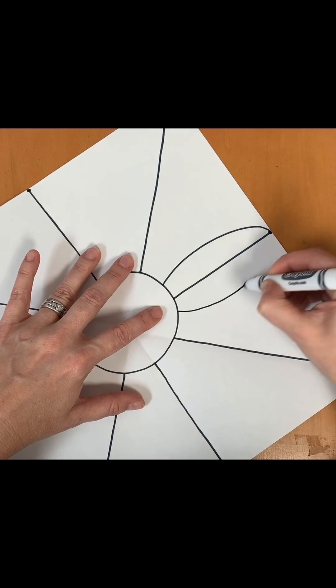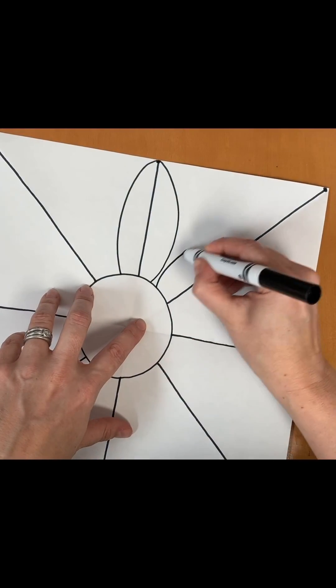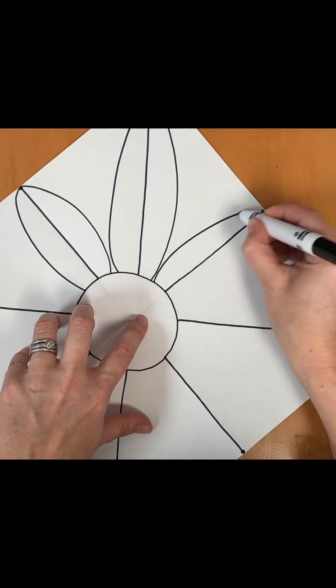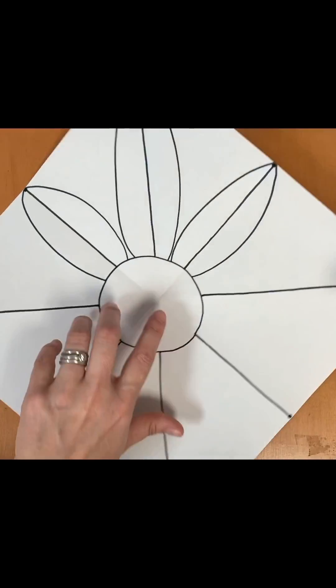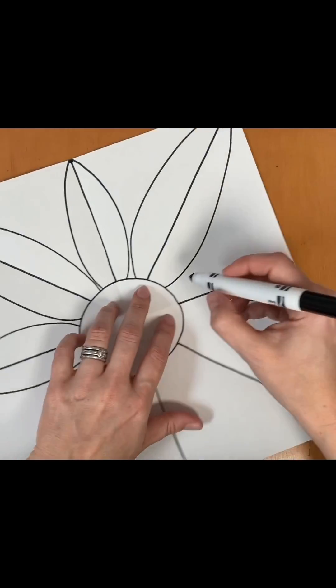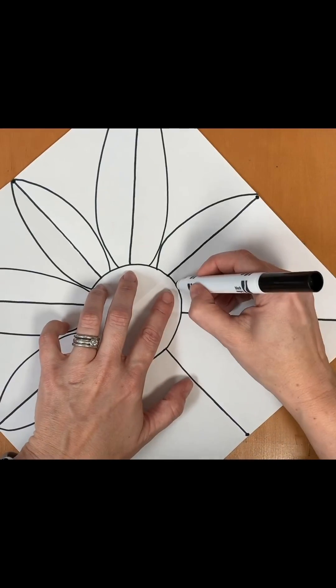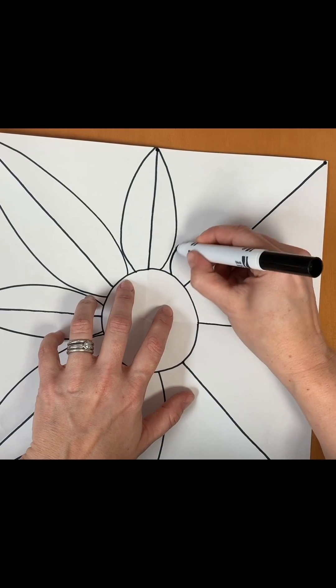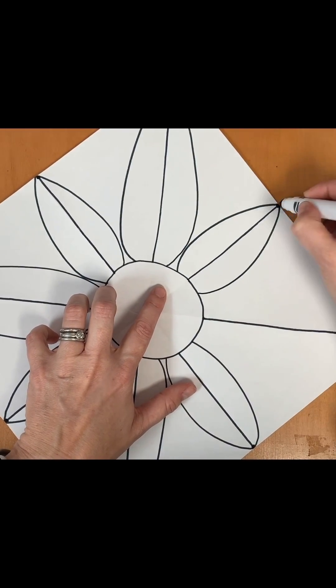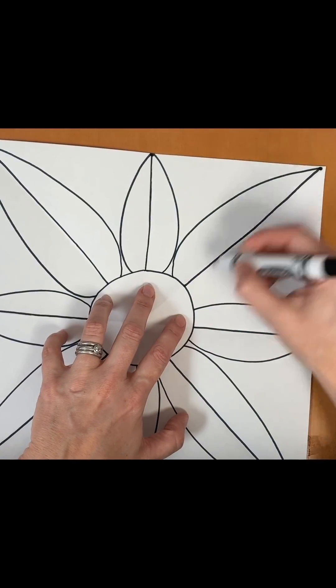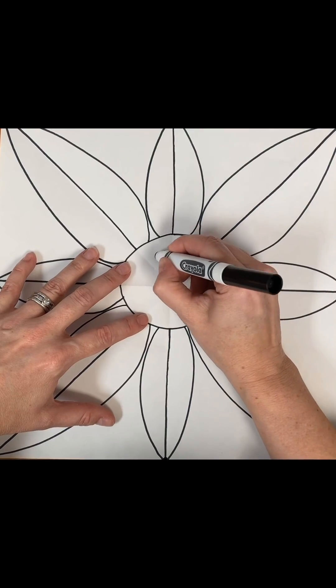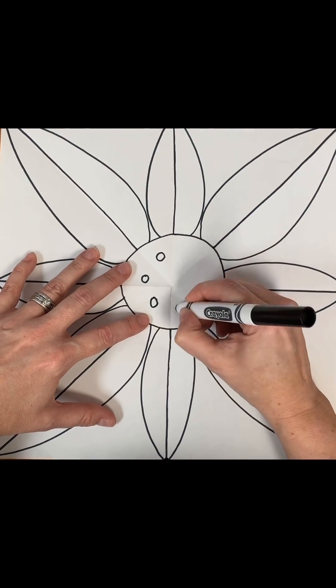Now add your petals. You're going to go from the circle to the dot, kind of like a rainbow and a smile for each petal. Take your time. Add seeds to the center of your circle.